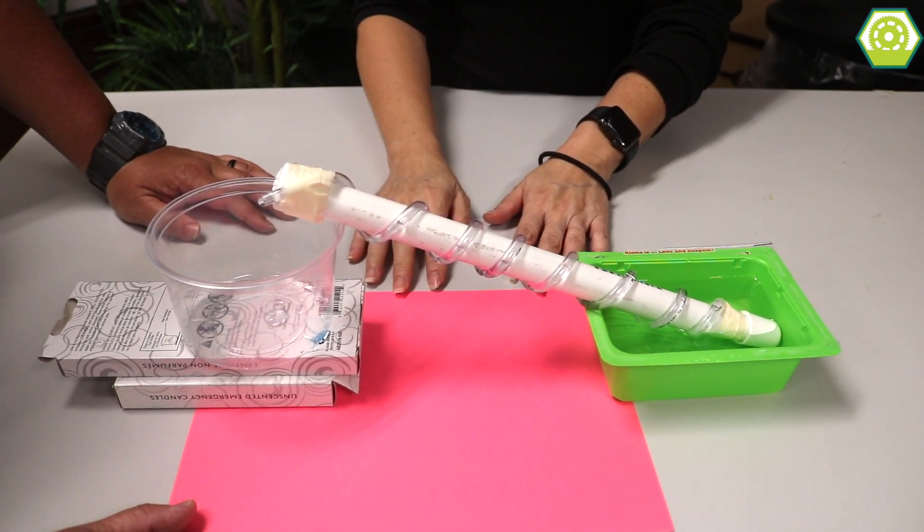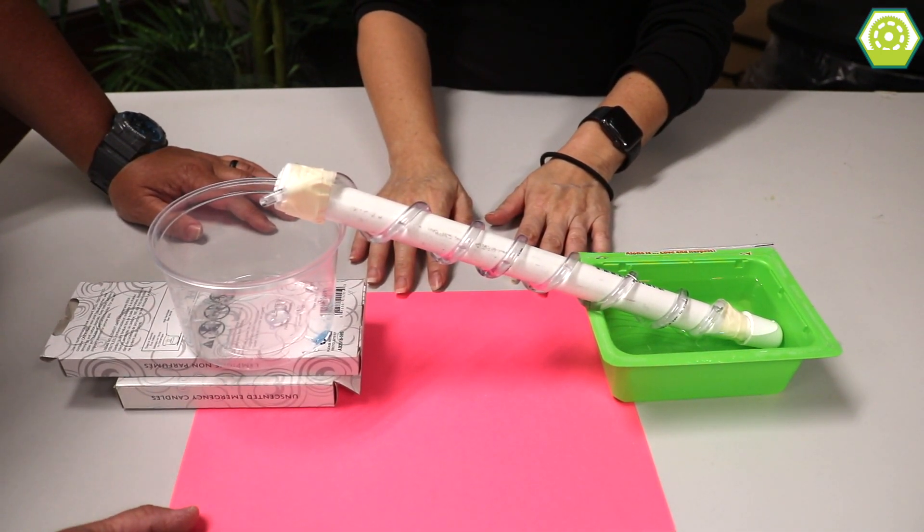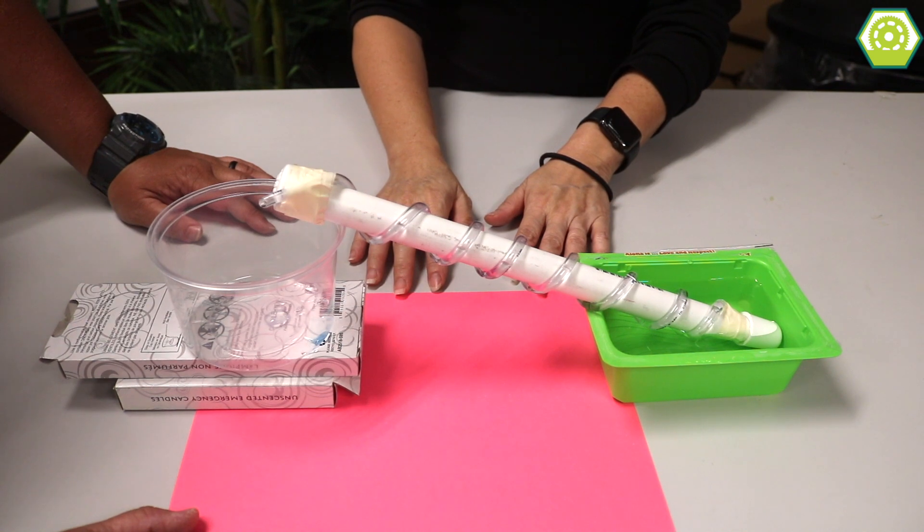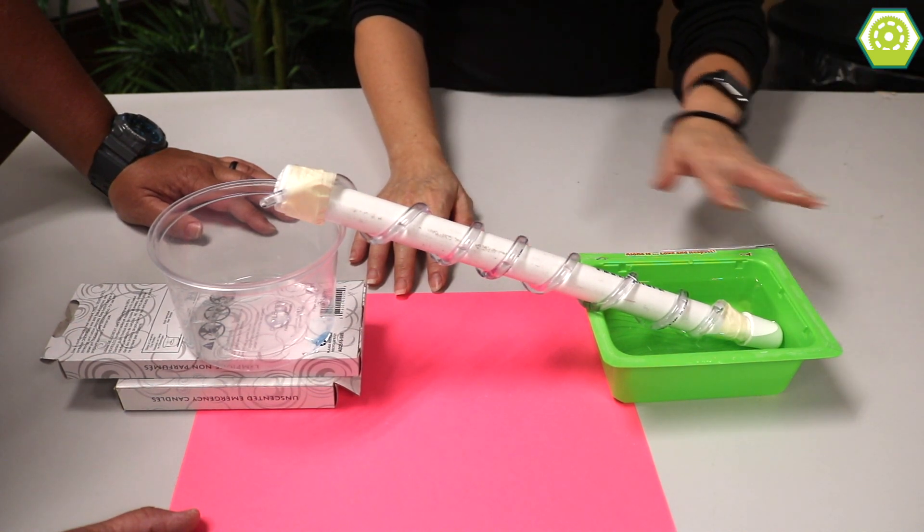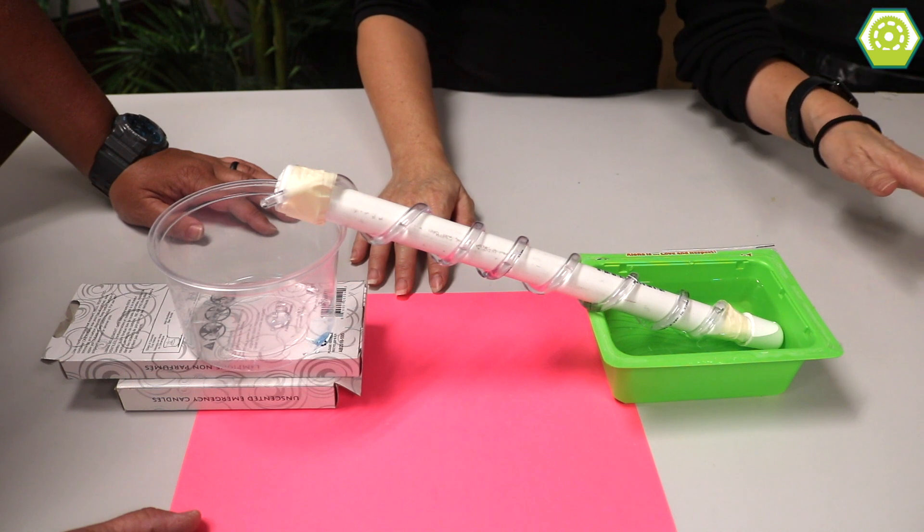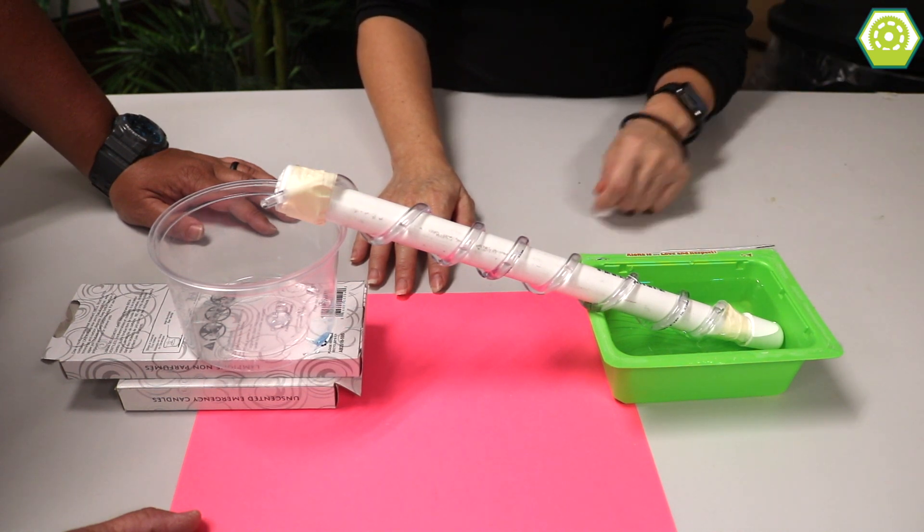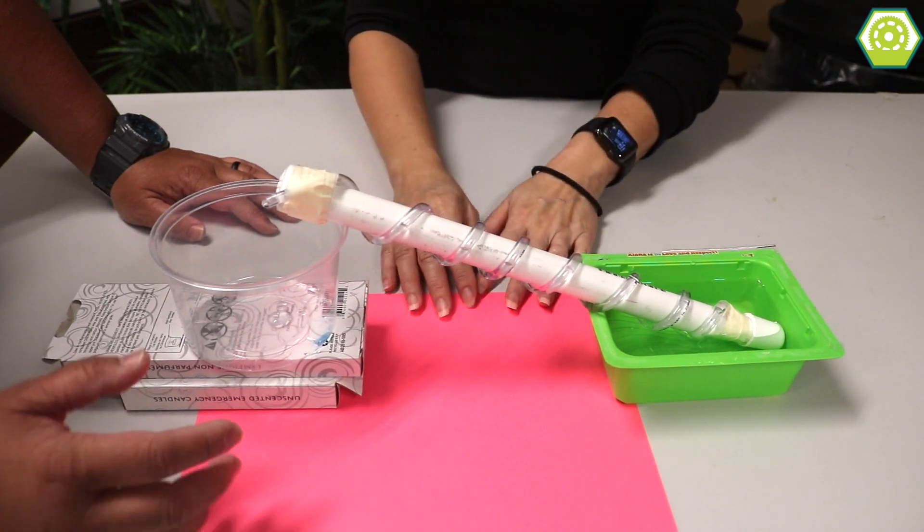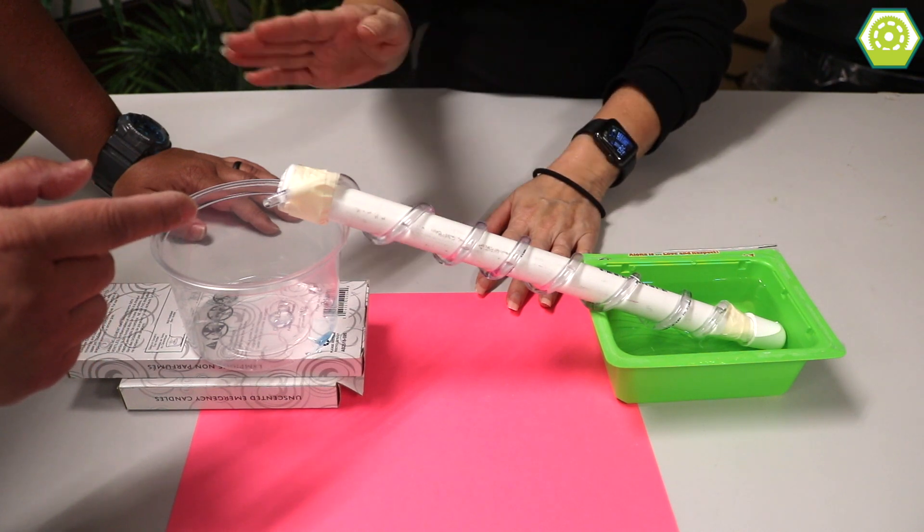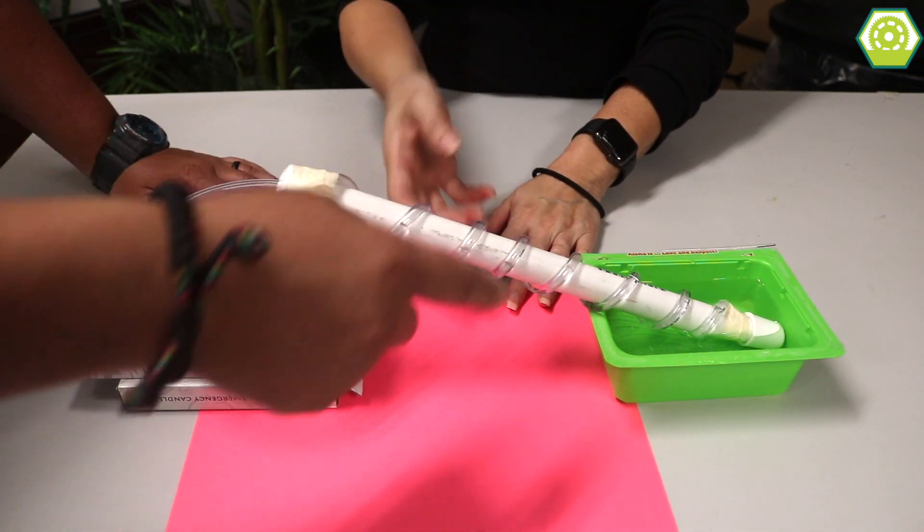an Archimedes screw. That doesn't look like any screw I've ever seen. It sure doesn't, but back in the old days—way back—this is what they used to get things from here to there. So in this case, water, right?